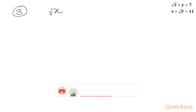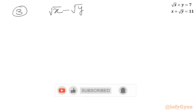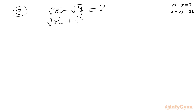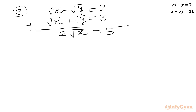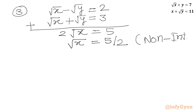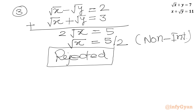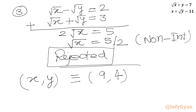Now we consider system 3: root x minus root y equal to 2 and root x plus root y equal to 3. Adding both equations gives 2 root x equal to 5, so root x equal to 5 over 2, which is a non-integer value. Since x would be non-integer, we can immediately reject this case. Therefore our final answer, the only ordered pair solution, is x comma y equal to 9 comma 4.